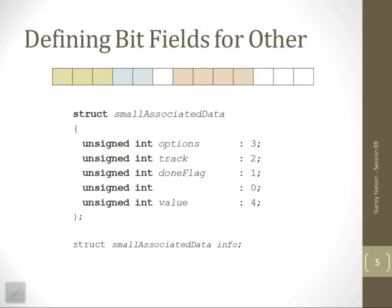If I wanted to assign multiple bits to a bit field, for example I want 3 bits grouped together, 2 bits grouped, and then 4 bits grouped. What I can do is say for options, I want 3 bits. So this would be options.